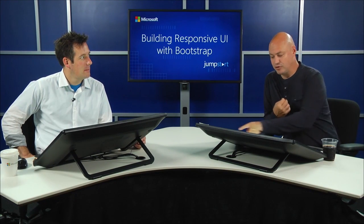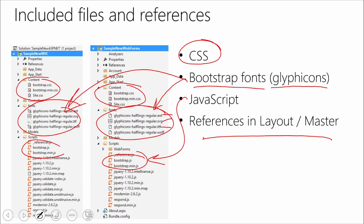One nice thing is that these are all referenced in the layout — if you're in MVC, or if you're in web forms it's in the master. So it's all wired together. If you just included the NuGet package you would get those files, and then the references are what you have to add manually. Or if you just do File New Project, you'll see that automatically.